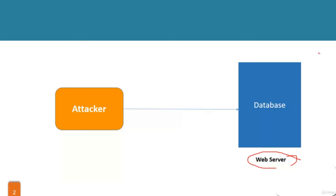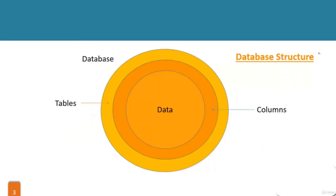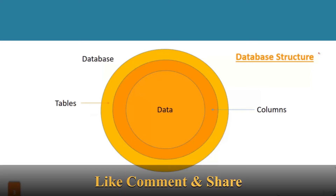I want to send some malicious content to the database, and if the database is not aware that this is malicious content, it will send me the information I want as an attacker — everything stored in the database: mobile numbers, fax numbers, email IDs, addresses, customer names, customer email IDs — everything.